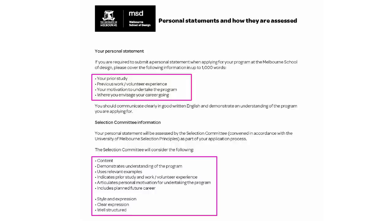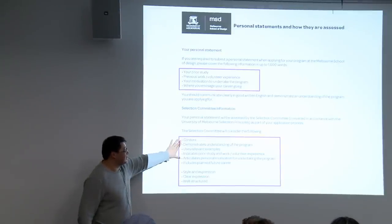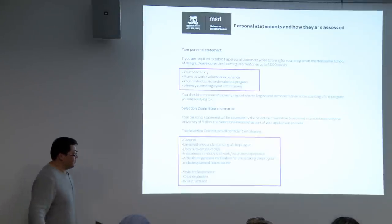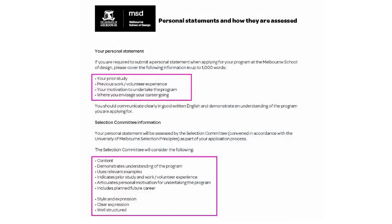Last thing: personal statement. Your personal statement should include your prior study, previous work or volunteer experience, your motivation to undertake the program, and your envisaged career direction. You'll be judged on content, demonstration of understanding of the programs, use of relevant examples, indication of prior studies or volunteer work, articulation of personal motivations including future career plans. We are very much interested in whether you can write, articulate clearly, and express and communicate yourself. Think of it like an application letter when you apply to an office.